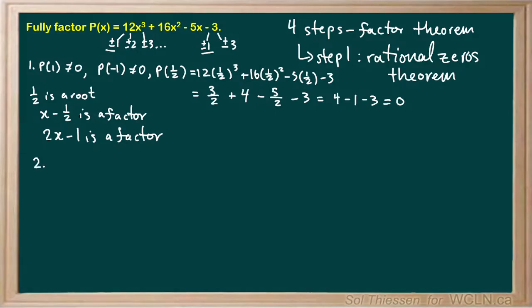So our next step is to divide our polynomial P of x by the factor we just found. P of x divided by 2x minus 1 is our next step. I'm going to do that the long division way, since we can't synthetically divide by a binomial that has a leading coefficient other than 1. So we have 2x minus 1 dividing 12x cubed plus 16x squared minus 5x minus 3.